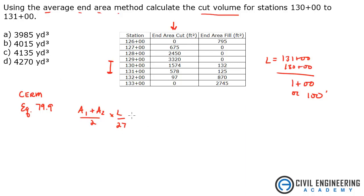So all we need to do is plug this in. The first area for the end area cut is 1574 plus the area 2 which is 578. Divide all that by 2. Multiply it by 100 over 27. And your units are going to come out to cubic yards.